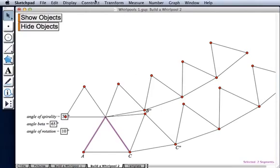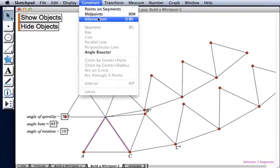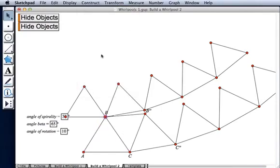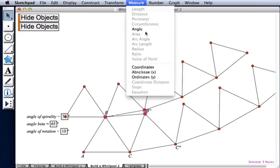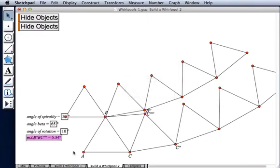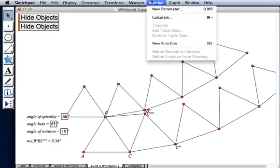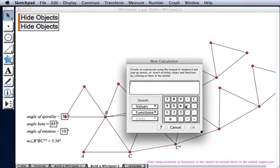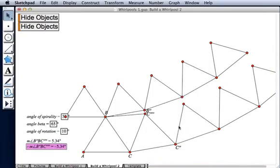First, I'm going to bring back point P, which keeps getting hidden. And I'm going to select these three points and choose measure angle. And we want to rotate by negative 5.34. So let's use our calculator to compute that. There we go.